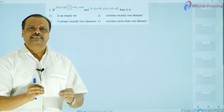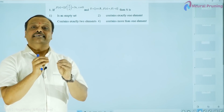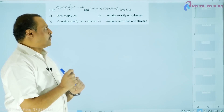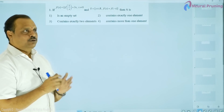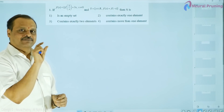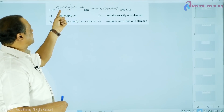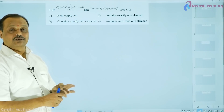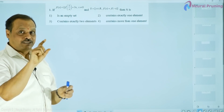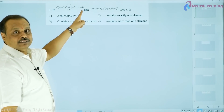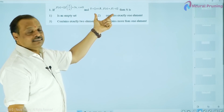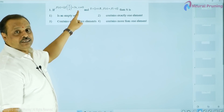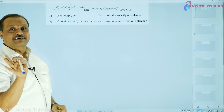Let us take some simple examples. I have selected examples from relations and functions, particularly functions. Consider this example: f(x) + 2f(1/x) = 3x, where x is not equal to 0. Reading carefully and noting conditions is very important. There is another condition: S is defined as the set of all real numbers x wherein f(x) = f(-x).